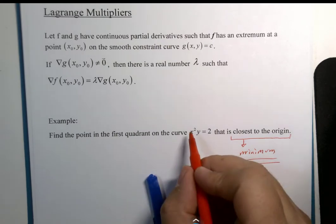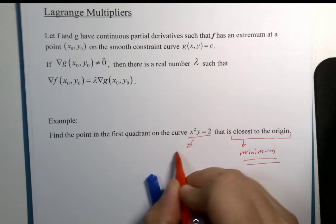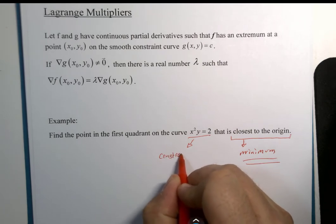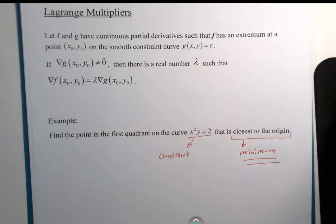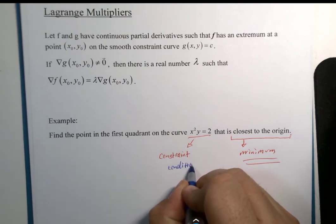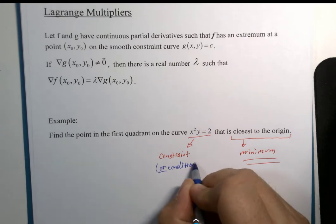This right here happens to be the constraint, which is also known as what again? That's right. It could be called the condition.